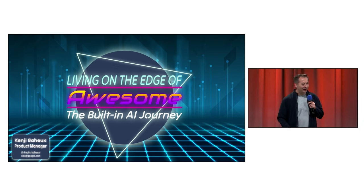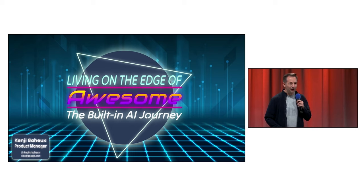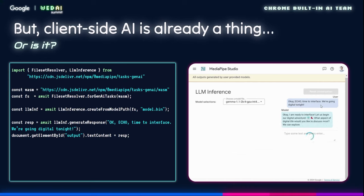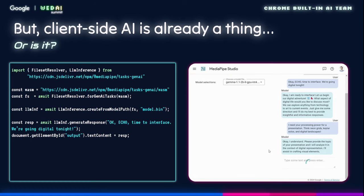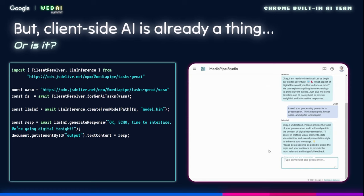And this is built-in AI. I'm going to walk you through what we are working on in Chrome with our built-in AI. So let's jack in. You might be thinking, client-side AI already exists, so why do we need built-in AI in the first place? Frameworks like MediaPipe let you run a local model on your device — a whole LLM on your device. But there's a catch: it is a huge download. This is gigabytes of data.